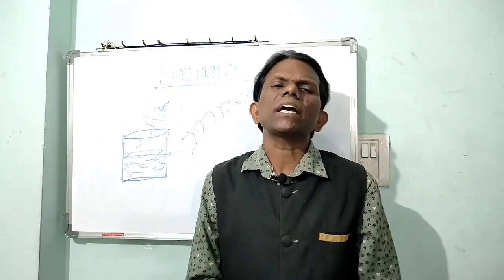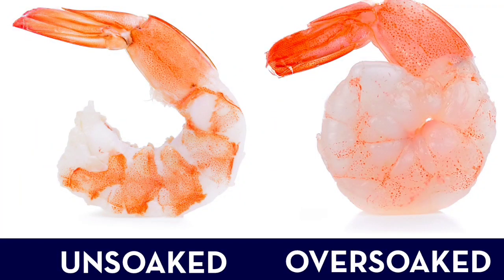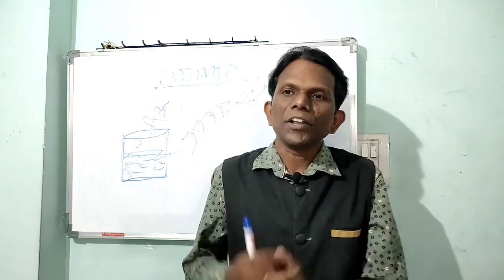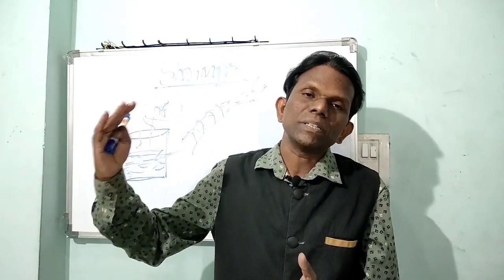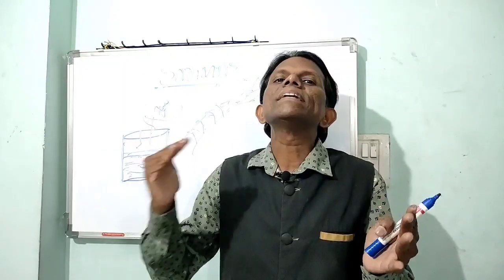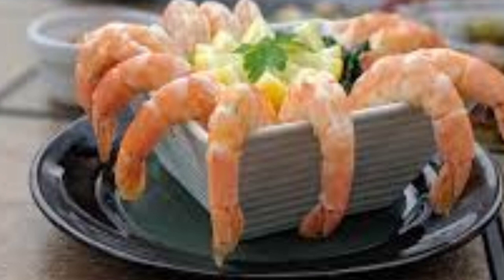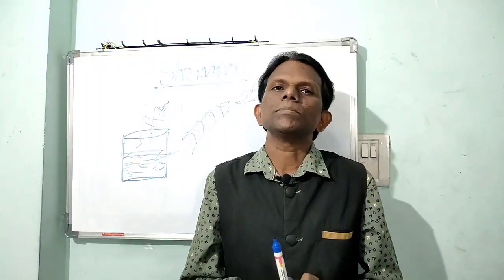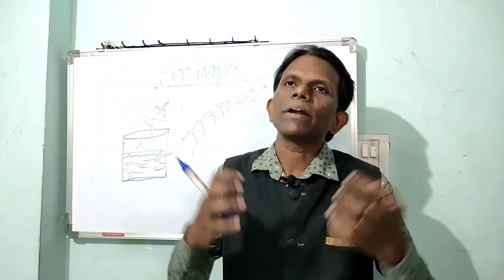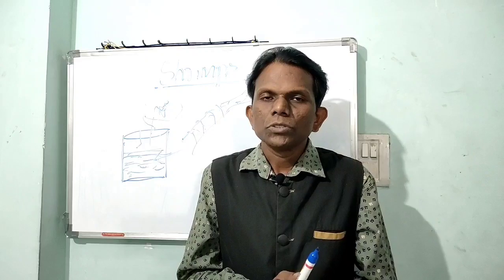Naturally, shrimp contains 74 to 77 percent moisture. When treated with additives like phosphates or non-phosphates with salt, the water retention capacity increases and moisture can rise to 83, 84, 85, 86, or even 87 percent — but 87 percent indicates over-soaking. We must always maintain moisture content at 83 percent or below. For dusted or breaded shrimp, moisture should be kept at 81 percent or lower, as excess moisture prevents the batter or pre-dusting from adhering properly to the shrimp meat.